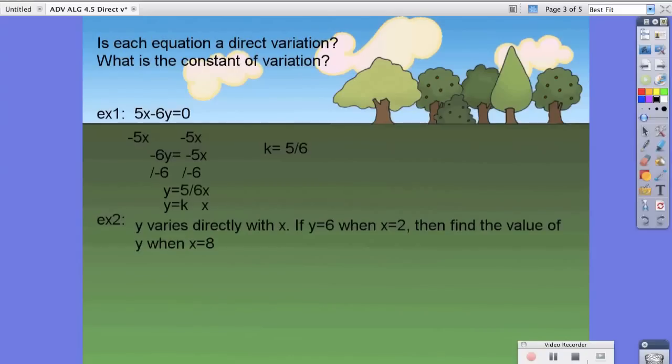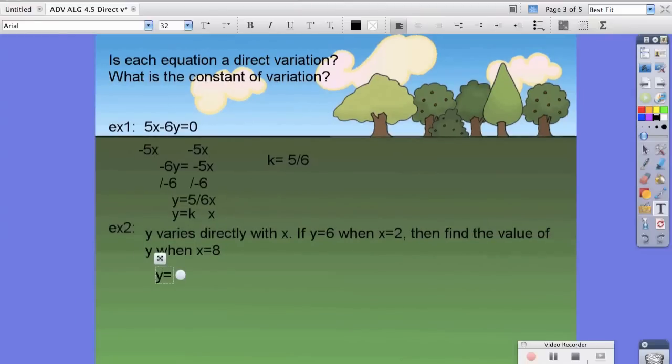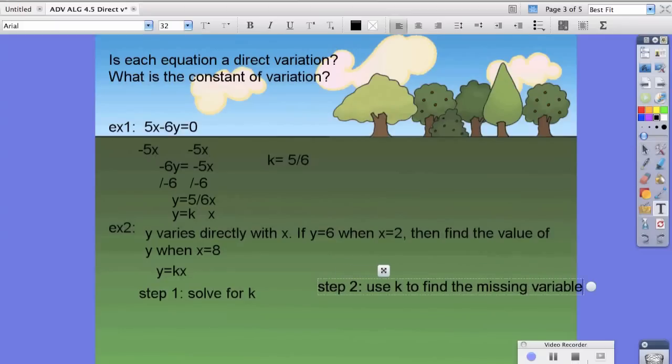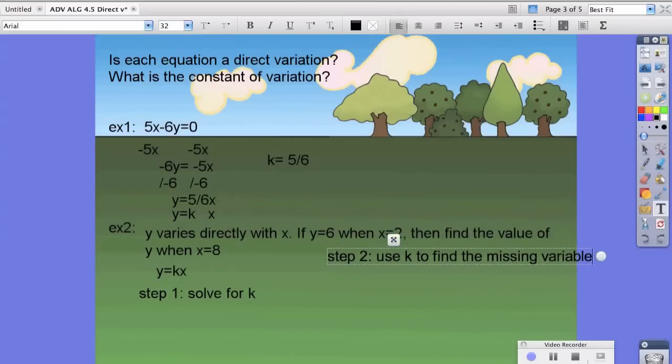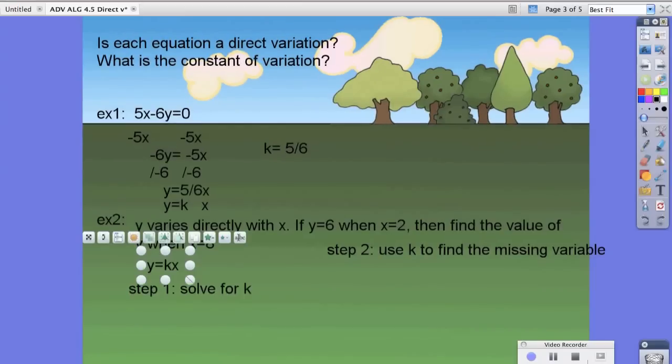So first it says y varies directly with x. So to keep tabs, we are going to write the equation, y equals kx. And we have to do two steps essentially. Step one is to solve for k. Step two is to use k to find the missing variable. And in both cases, you're still going to have to use our equation y equals kx.